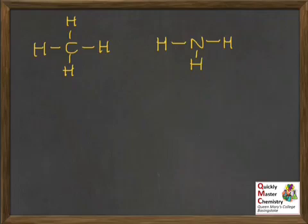To introduce the steps involved in the explanation, we'll consider the two substances drawn here. On the left, methane, CH4, and on the right, ammonia, NH3. The first step is always to clearly state the type of bond that would be broken when the change of state happened. Both of these substances are covalent molecular substances, so the kind of bonds we're talking about will be intermolecular bonds between the molecules.